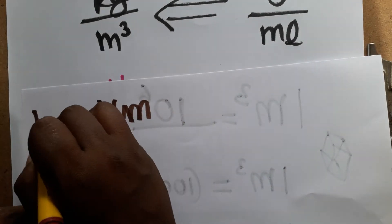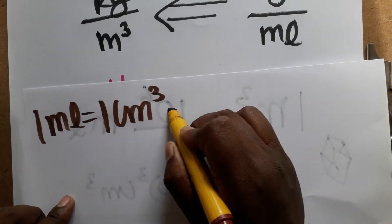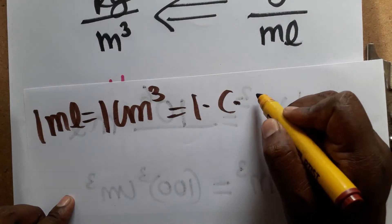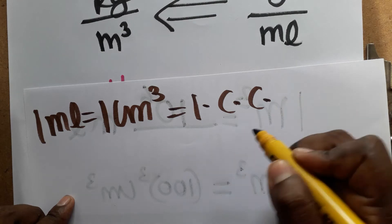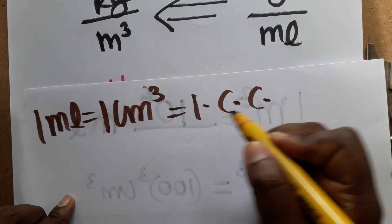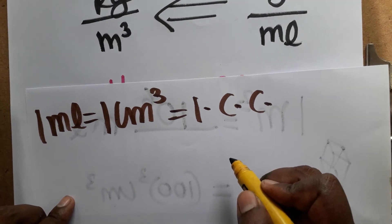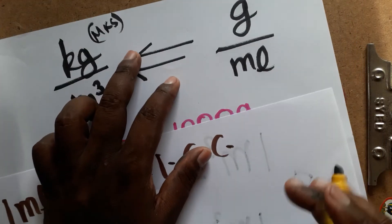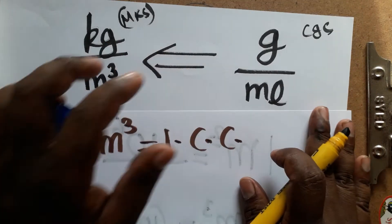Now for mL to meter cube: one mL is equal to one cc, which is one centimeter cube.